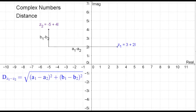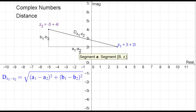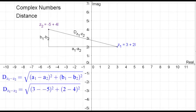If we want to find the total distance between Z1 and Z2, it uses the Pythagorean theorem: the real component difference squared plus the imaginary component difference squared, then take the square root of that, and you get the distance. So for our particular example, the distance between Z1 and Z2 would be the square root of 3 minus negative 5, the quantity squared, plus 2 minus 4 squared.